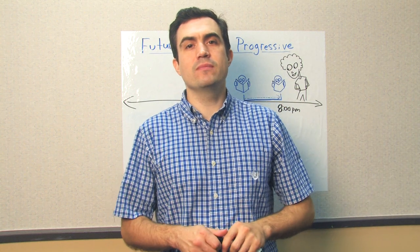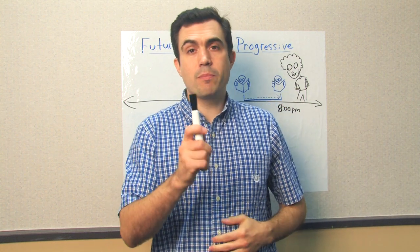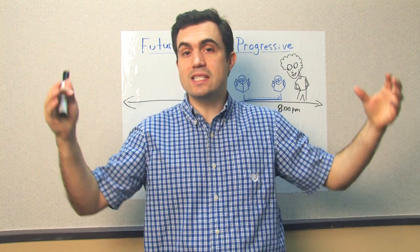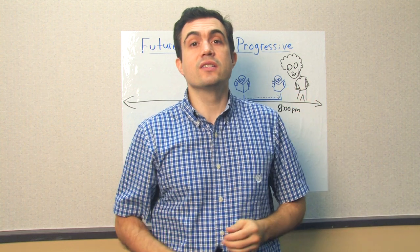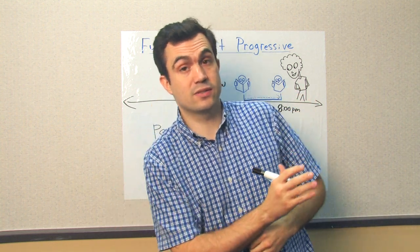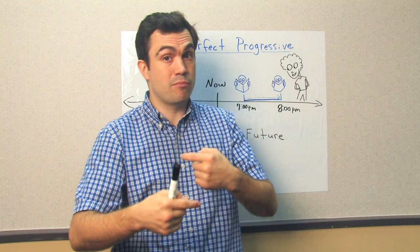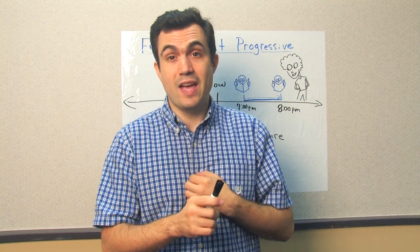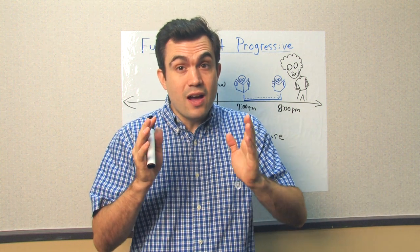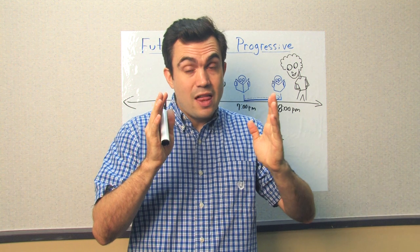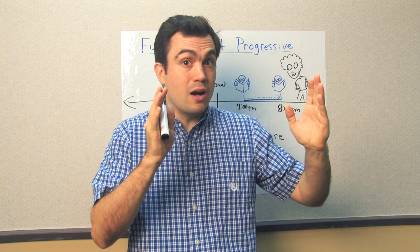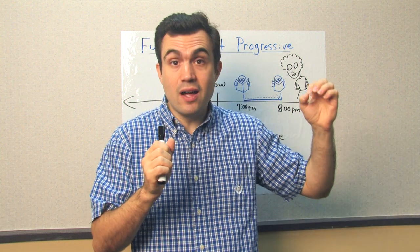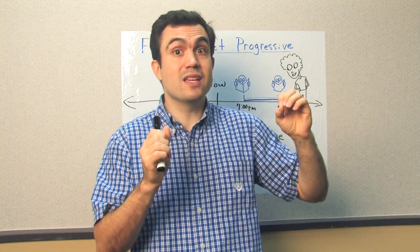Hi, I'm Teacher Tom. Let's talk about the future perfect progressive. Remember, progressive or continuous means 'ing' — something that is in progress, the action is in progress. So the future perfect progressive emphasizes the duration of an activity in the future that will be in progress before the occurrence of another activity or occurrence in the future.